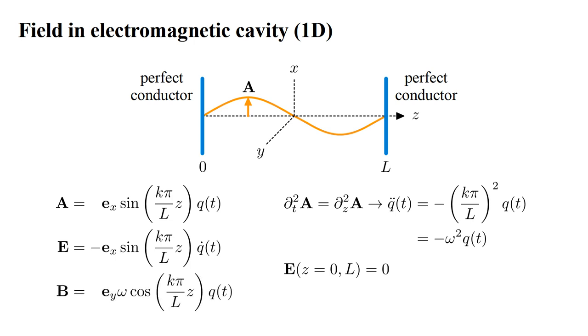The magnetic field is the curl of A, which evaluates to e_y ω cos(kπ/L)z times q.